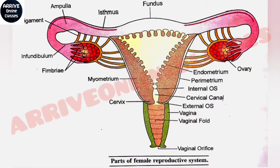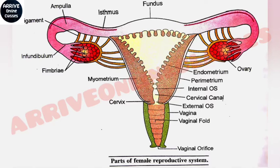Hello everyone, welcome to Rave Morning Classes. This is Praveen here. Today we are going to discuss a very important topic — the female reproductive system. This topic is important for competitive exams as well as for 10th board and plus 2 board. So let's start the video.